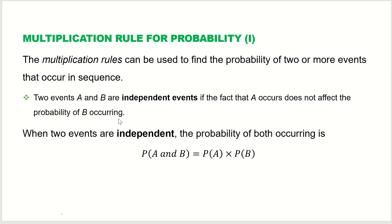The occurrence of event A does not affect the occurrence of event B. They may not occur at the same time, or even if they are occurring at the same time, the occurrence of one does not affect the other. When two events are independent, the probability of both occurring — P(A and B) — uses the multiplication rule: probability of A and B is equal to probability of A times probability of B.